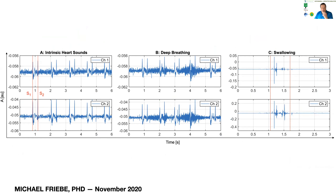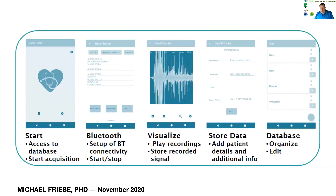On the swallowing part, the green line shows a significant difference from any of the other signal types. These are used mainly for segmentation points. Here's an example of when you have segmented these out and can subsequently use them for feature extraction — what a heart sound looks like, what deep breathing looks like, and what swallowing looks like.